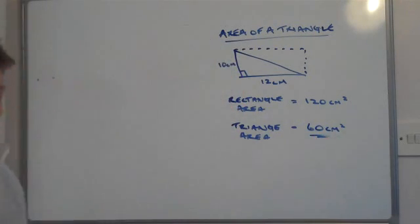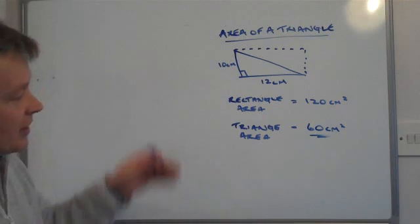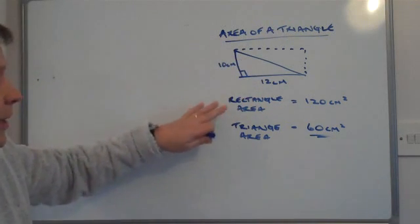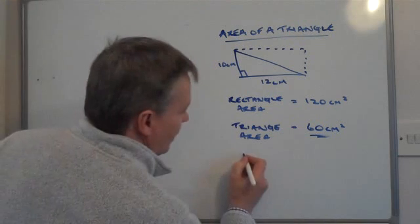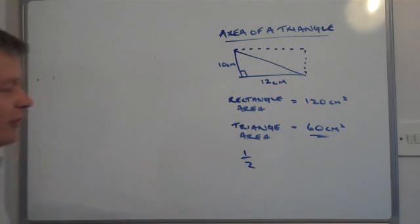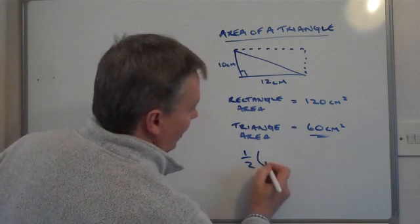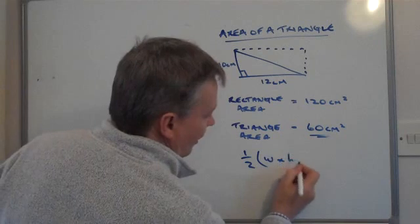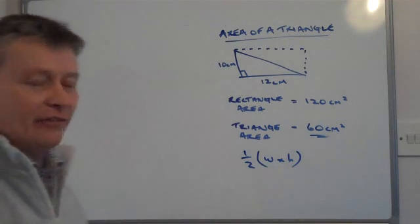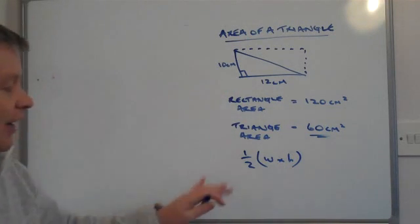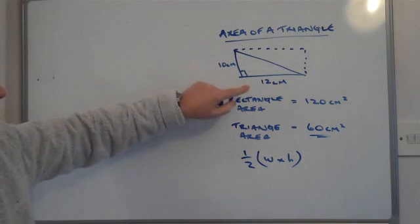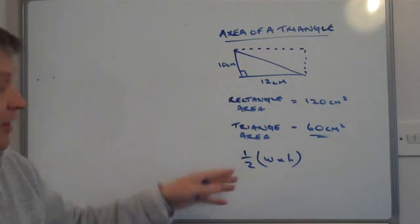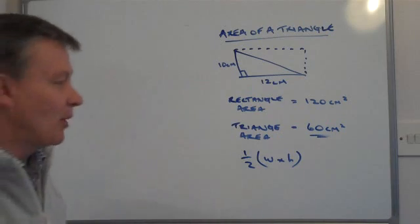And that's your answer when working out the area of the triangle. Now, you can use this method, or you can write out the formula itself. The formula is usually given as something like a half width times height, or a half breadth times depth. But what they mean is multiply that by that, and then divide it by 2, or multiply it by a half.